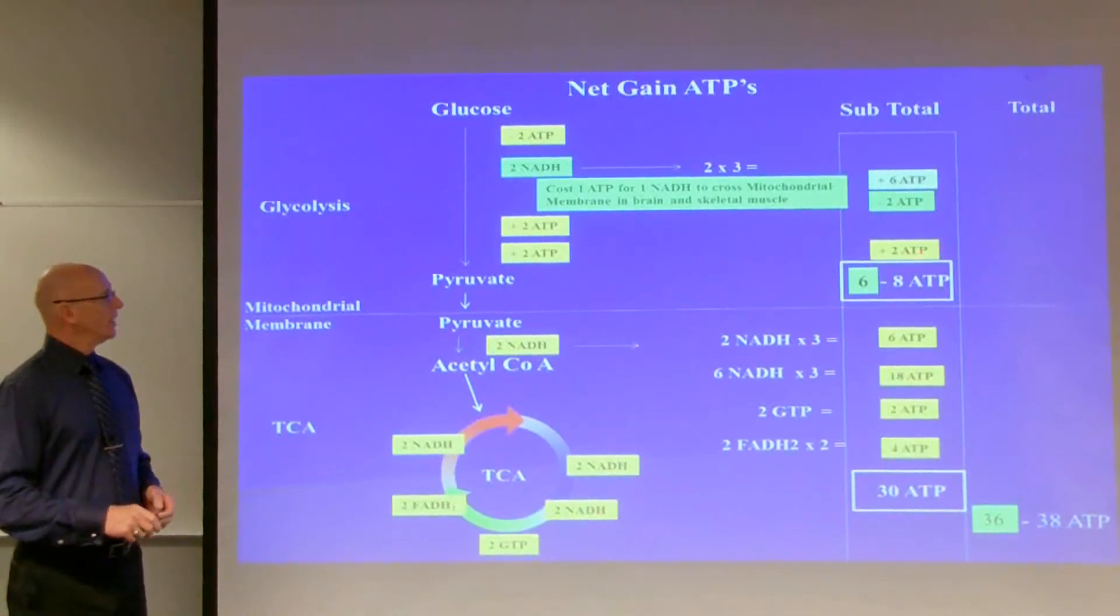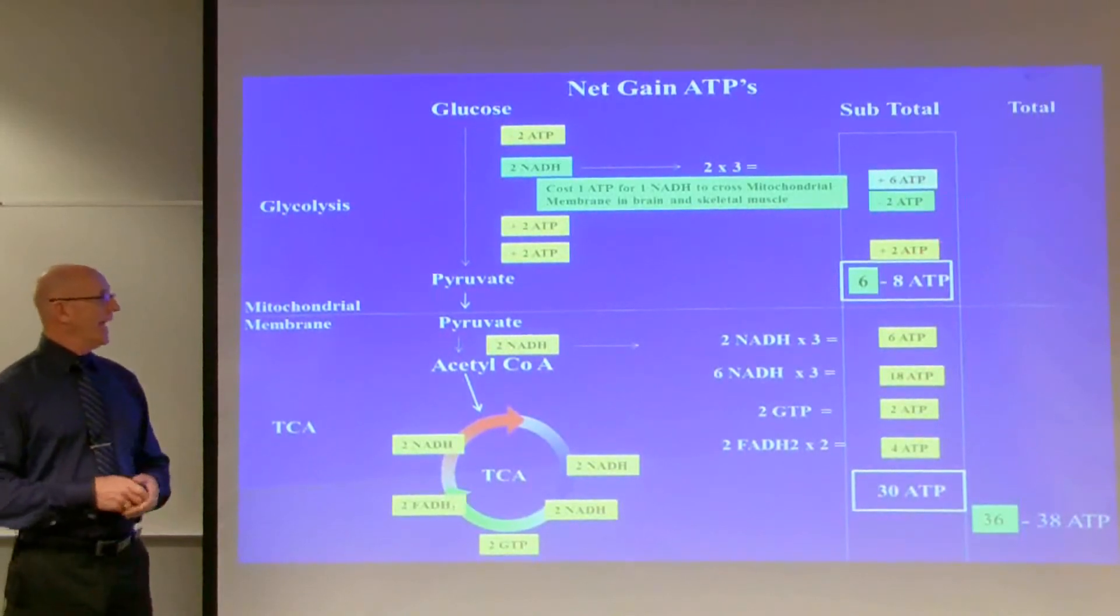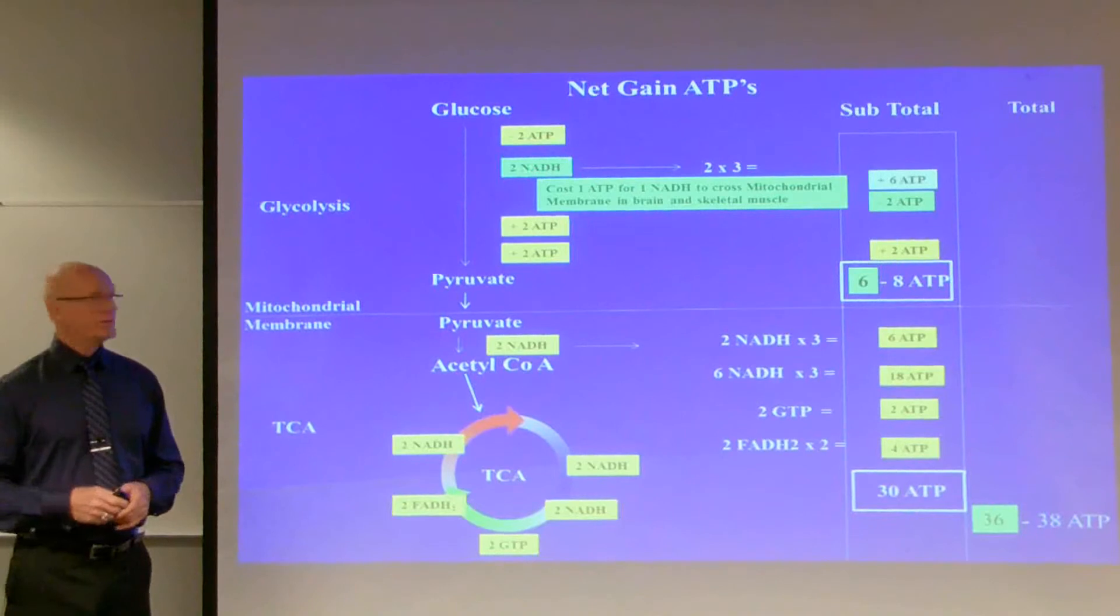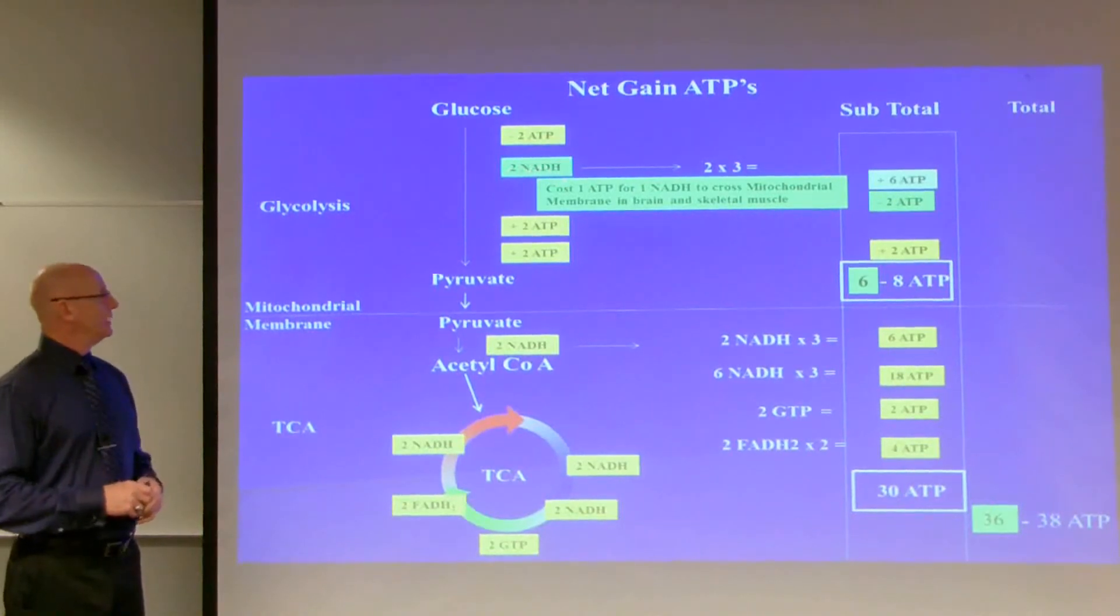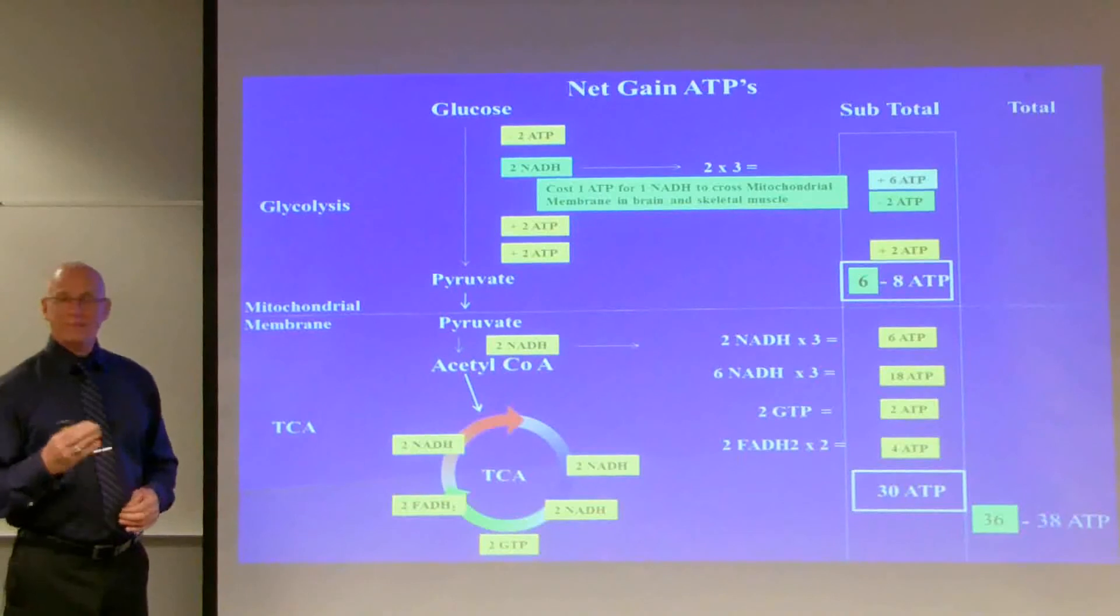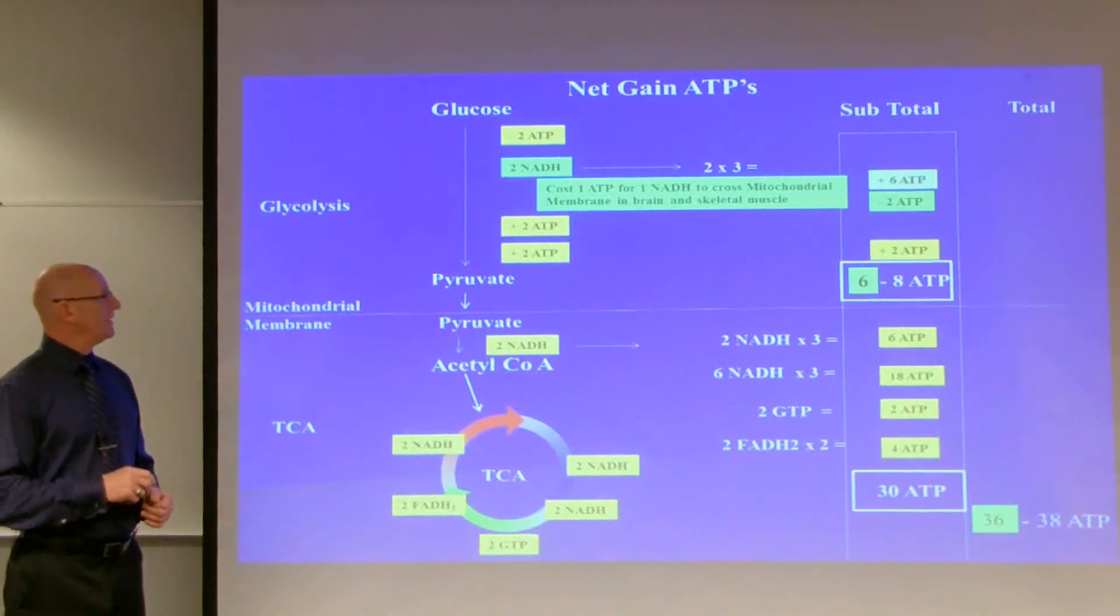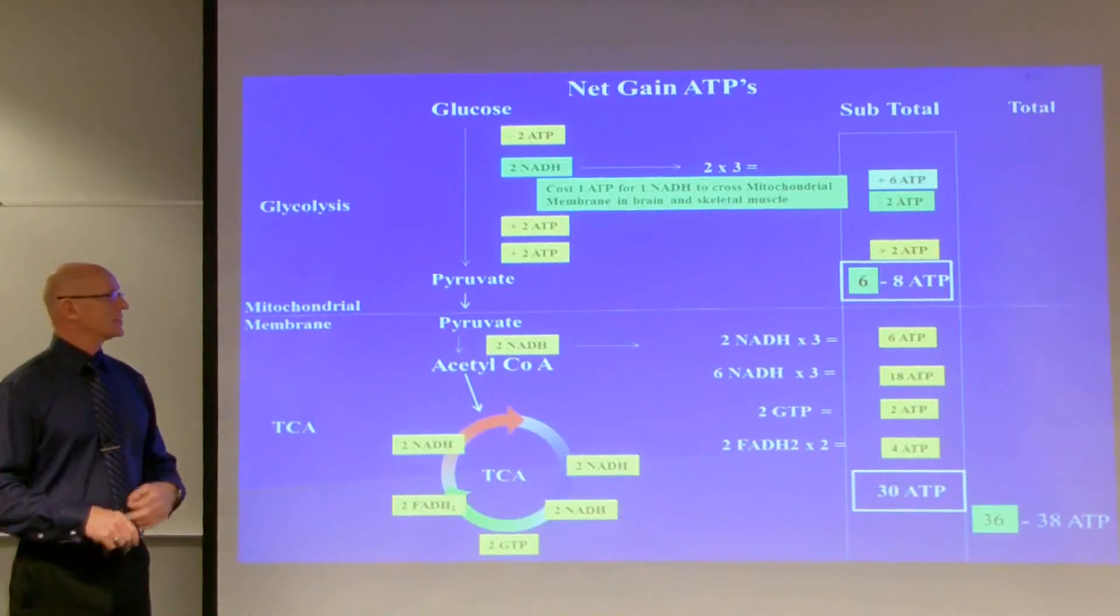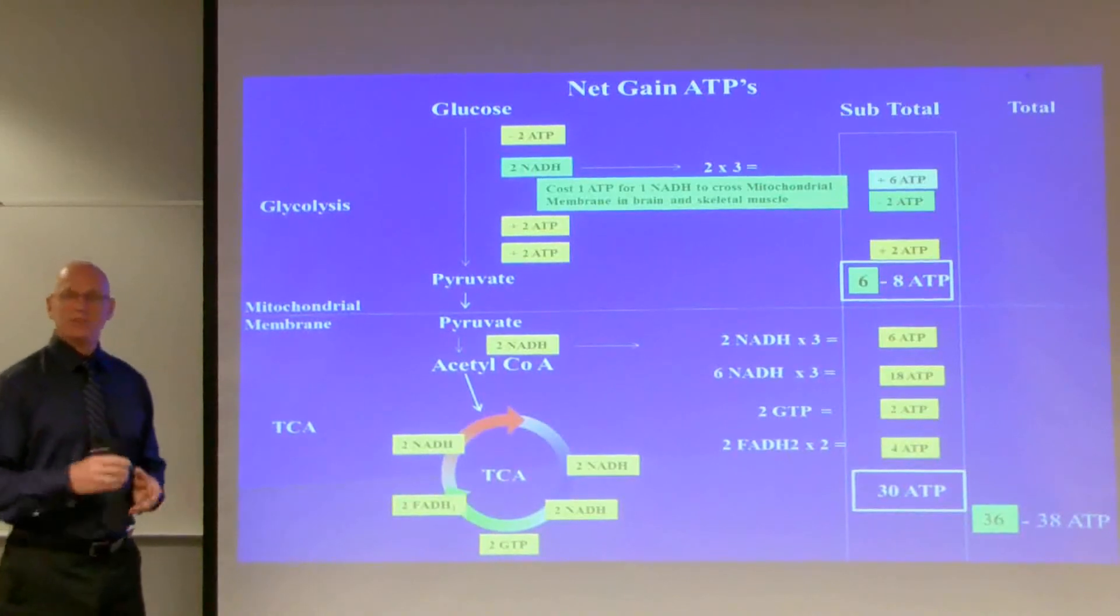And the two plus the six is eight. Now, in some tissues, this nicotinamide adenine dinucleotide is going to cost us one ATP to get across the mitochondrial membrane. That's in some tissues such as the brain and skeletal muscle. So that will cost one ATP for each NADH. So if you're having a total of six, then you can reduce that by two and then it's four. And that four plus two ATPs is six. So that's where we come up with the difference between six to eight ATPs in glycolysis. And it depends on the tissue.